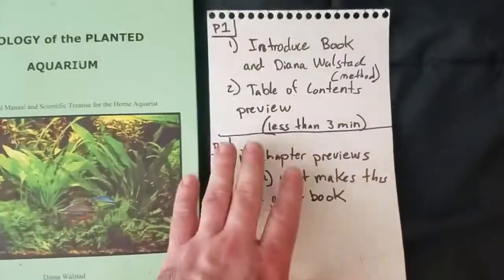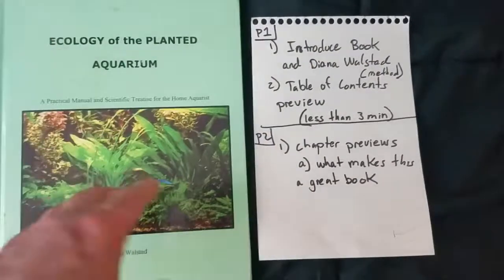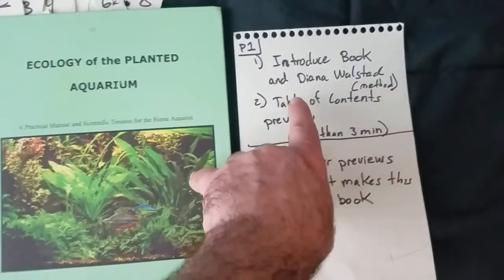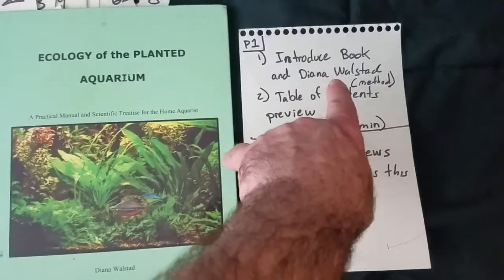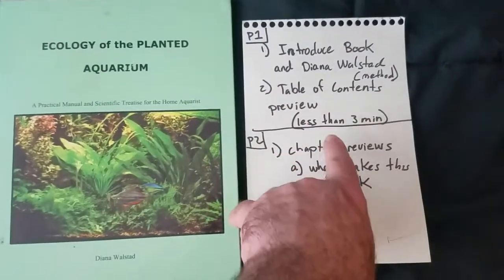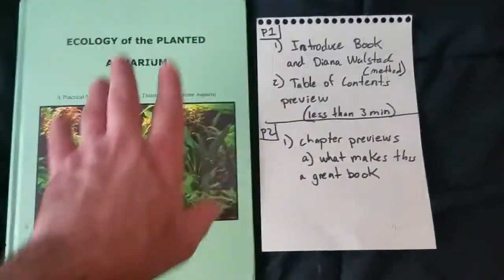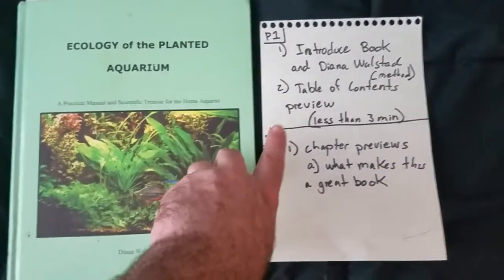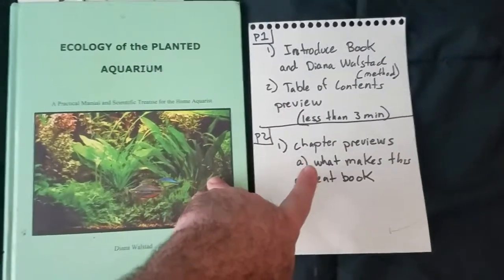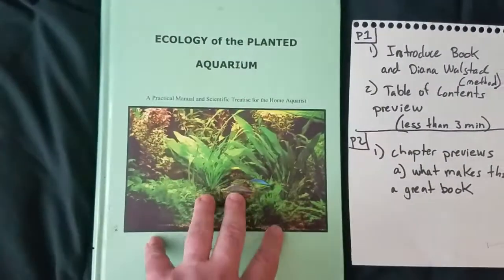So this video is going to be in two parts within one video. Part one, I'm going to introduce you to the book and Diana Walstad, and briefly go over the table of contents — that should be less than three minutes. Part two, I'm going to give you chapter previews and talk about what makes the book a great book, in my opinion.